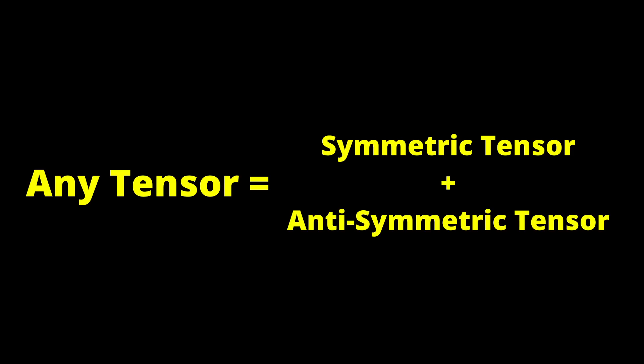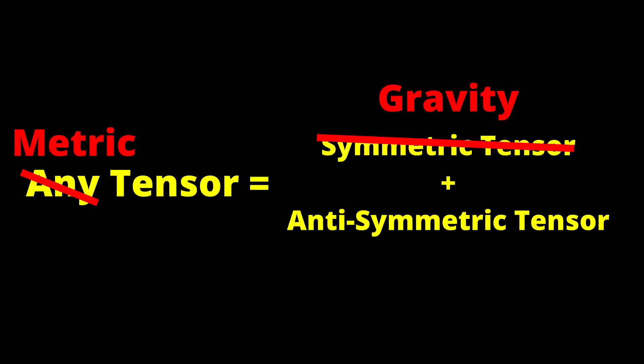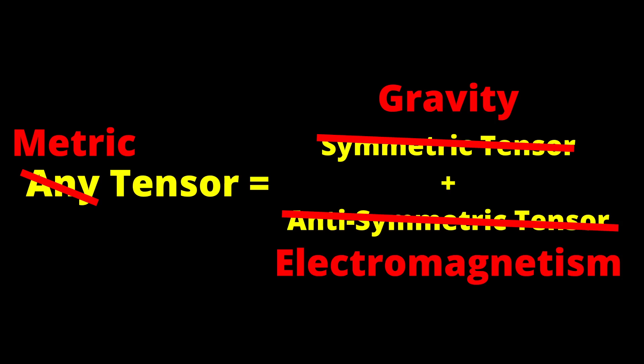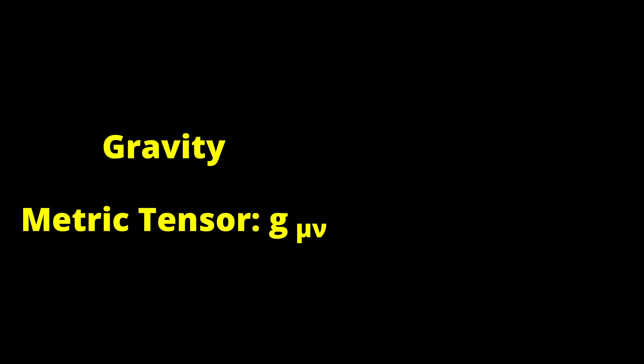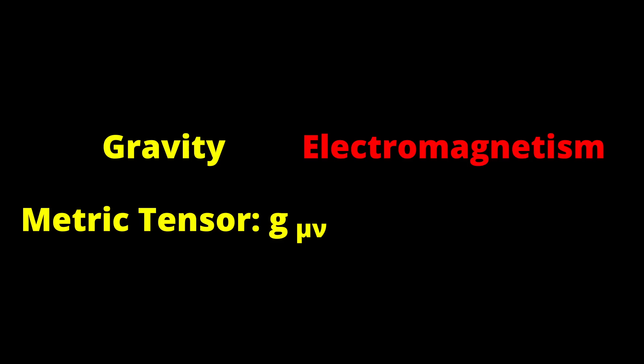So Einstein said: we'll make the metric tensor into an arbitrary tensor, use the symmetric part for gravity and the anti-symmetric part for electromagnetism. I think that this is where things went wrong, because the metric tensor in general relativity is not related to the field strength tensor, but to the electromagnetic potential.